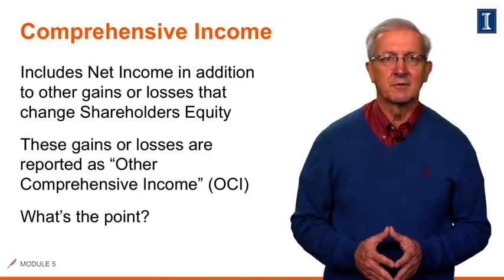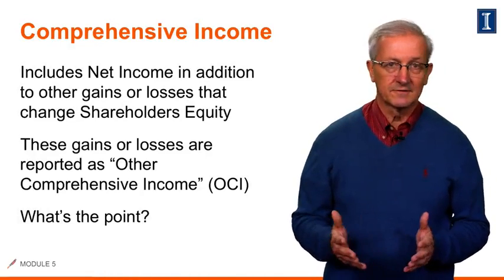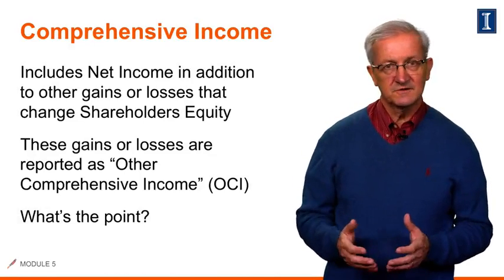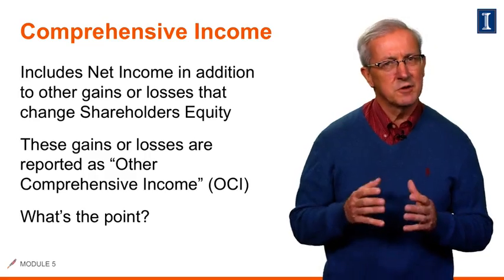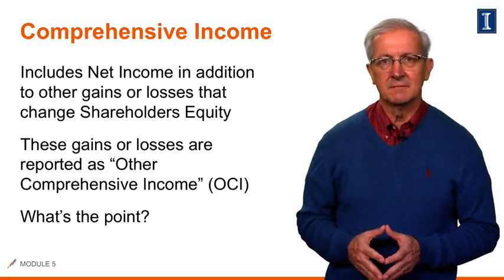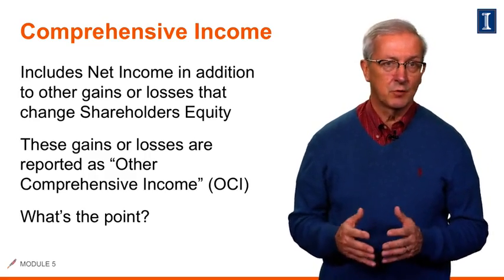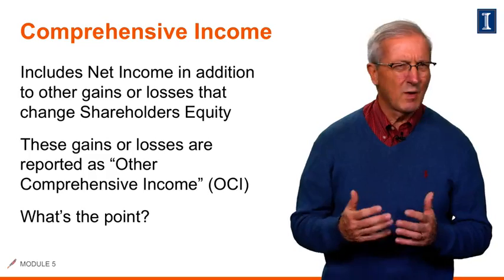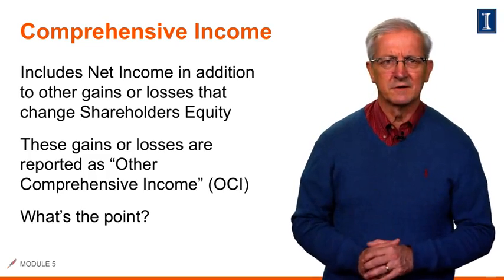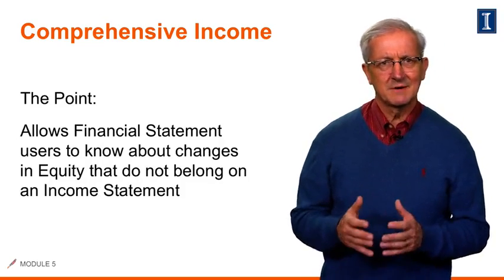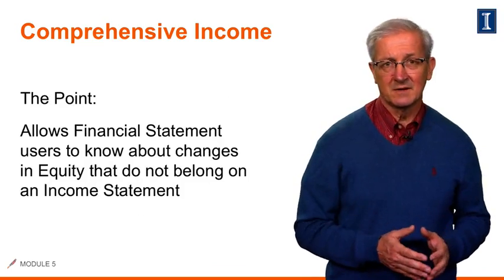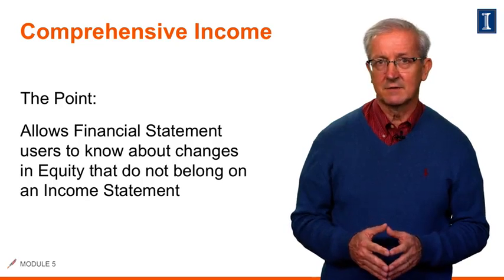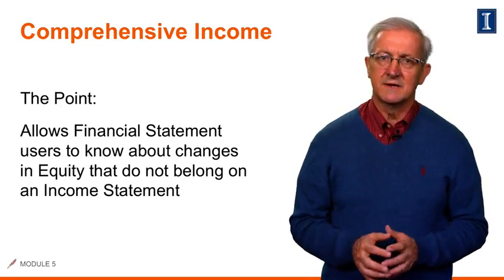So let's further discuss this statement of comprehensive income, or SOCI. As discussed previously, this statement summarizes the changes in shareholders' equity that were not part of our net income on the income statement. These gains and losses are reported as other comprehensive income, or OCI. By separating these types of items, we can help users of the financial statements know about changes in equity that do not belong on the income statement.